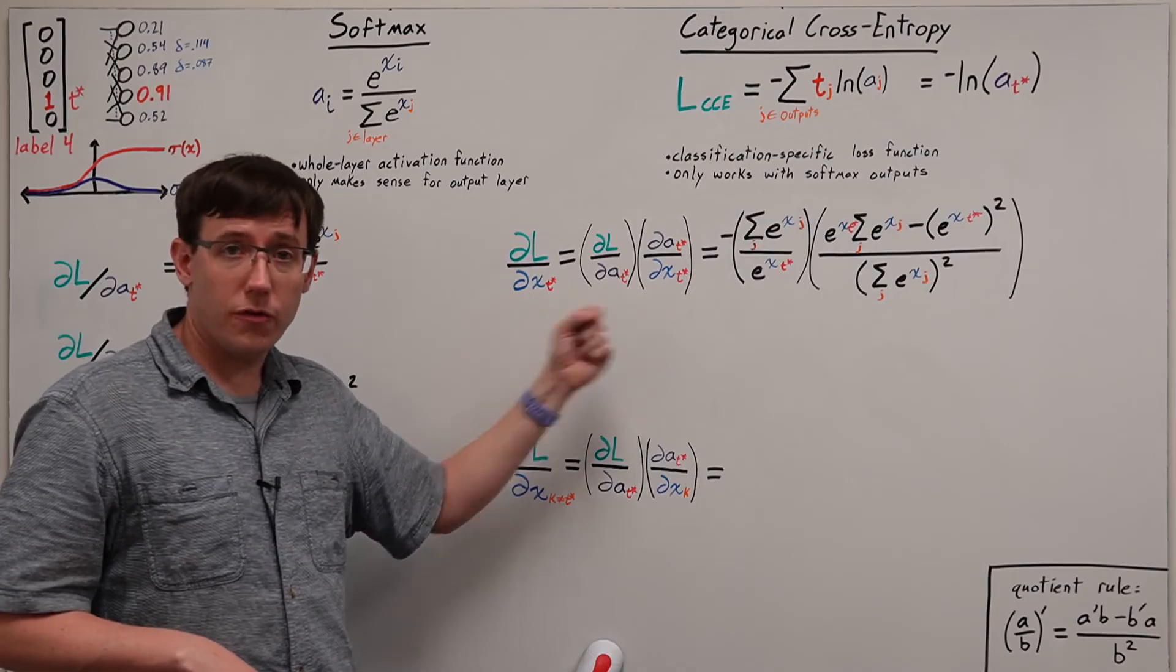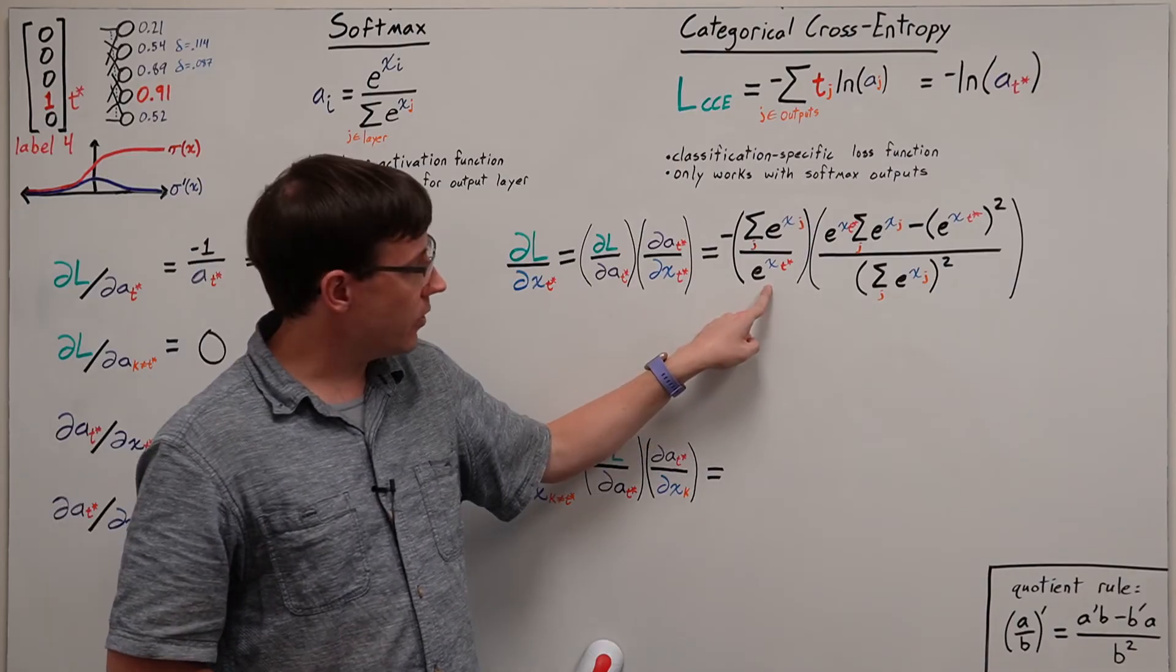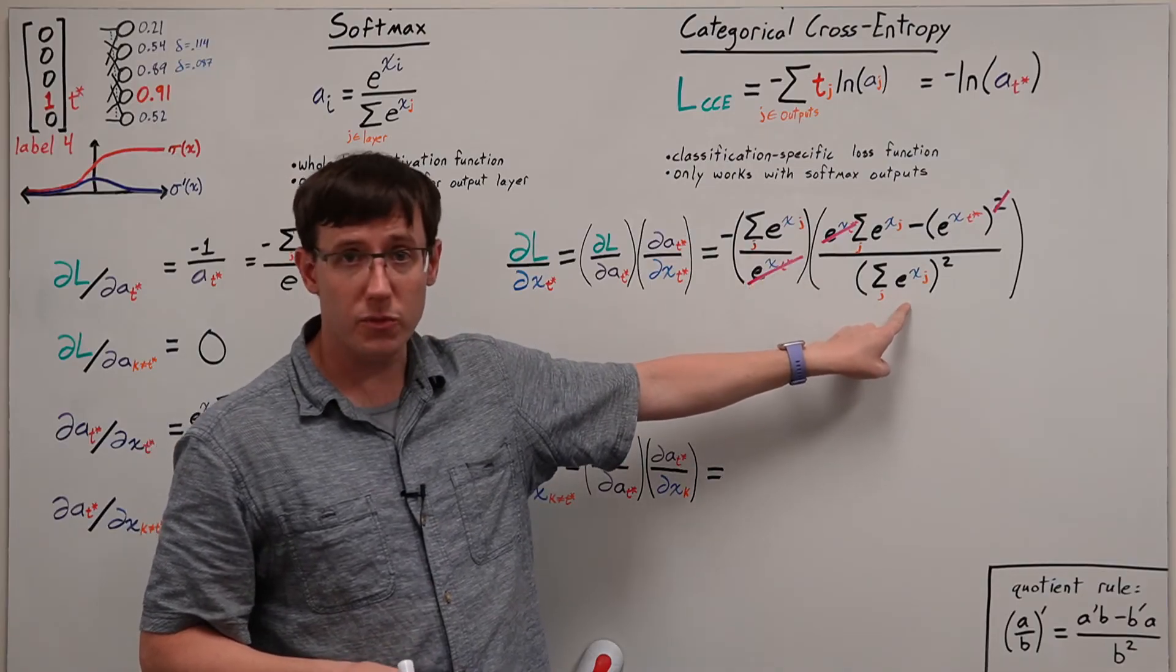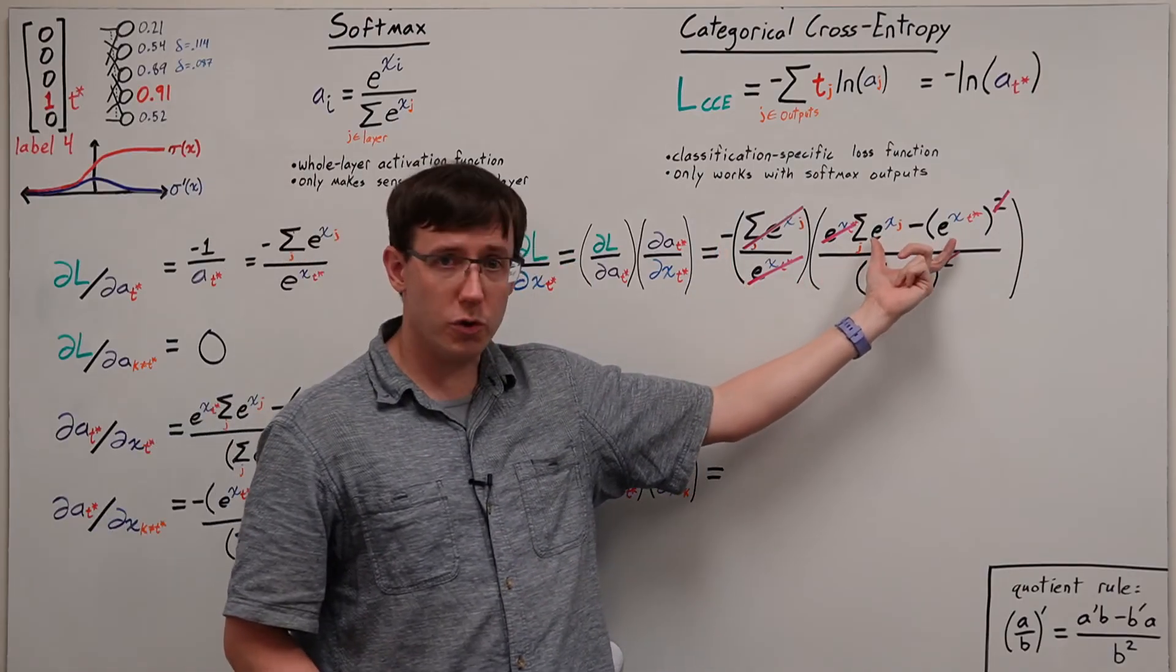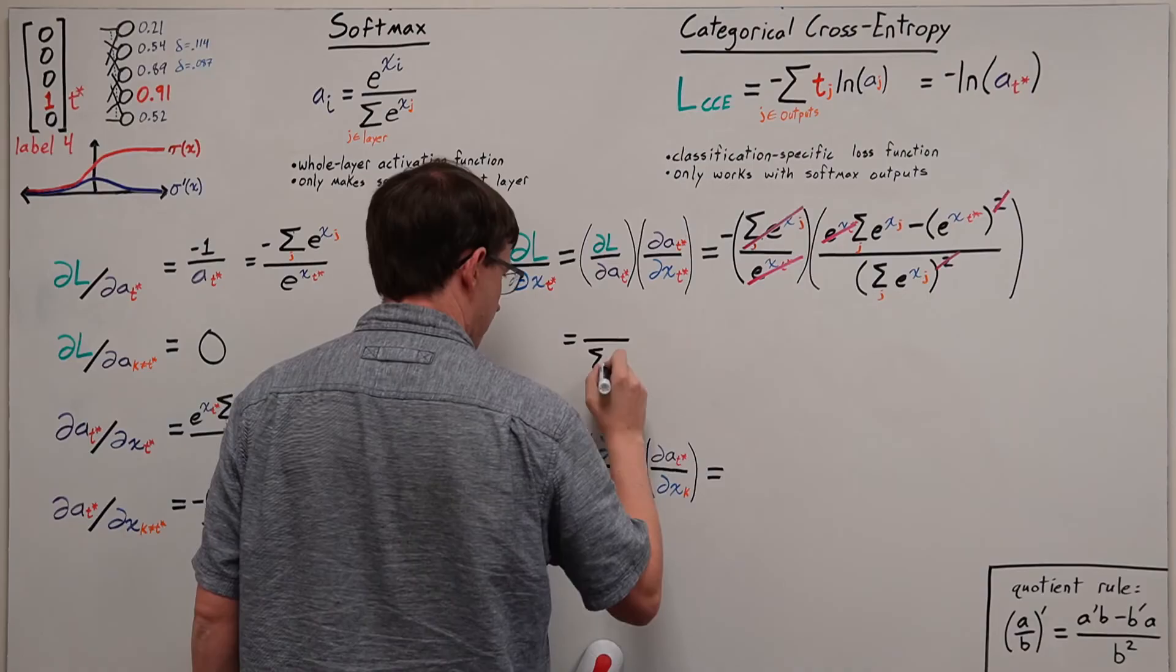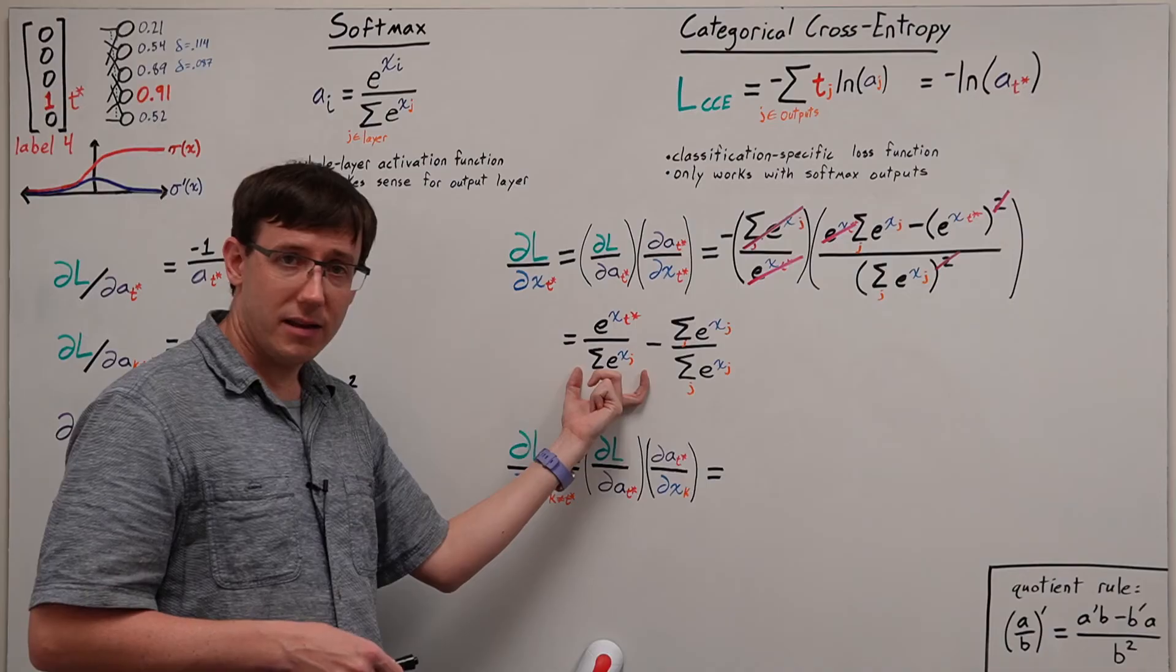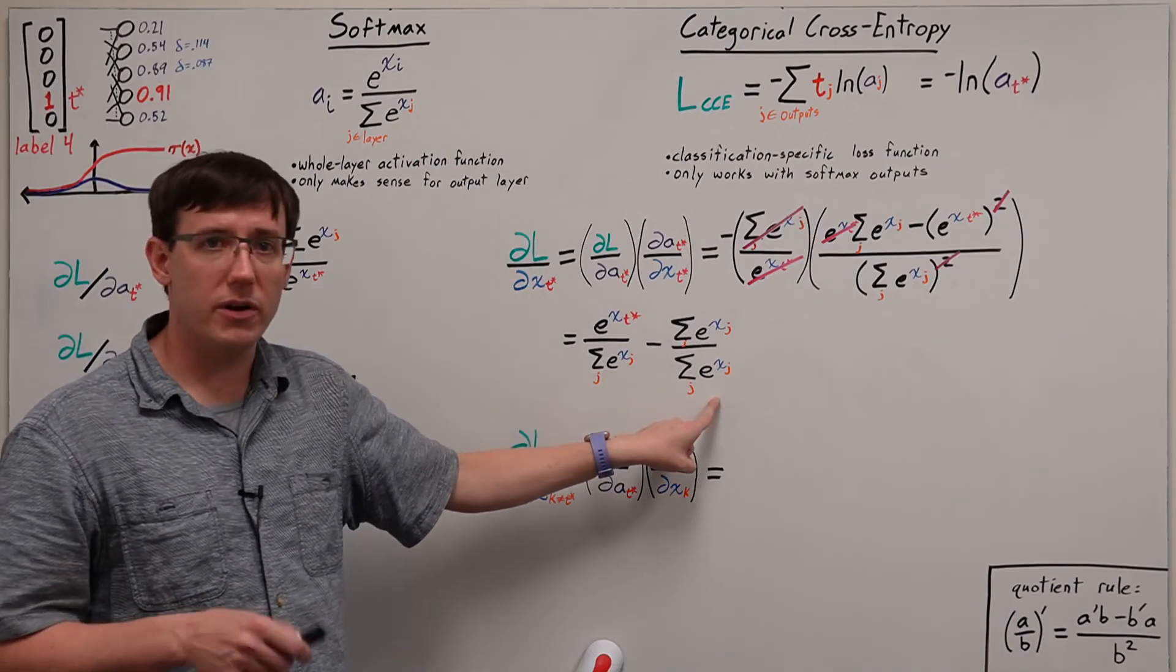When we write out this product for the t star node, we see lots of things we can cancel. The e to the xt star in the denominator cancels with the one that we can factor out from the difference. And the sum in this numerator cancels with one of the sums in the denominator. And we're left with the minus sign out front, and then these two terms in the numerator that we can split up and simplify further. And here we have, as the first term, exactly the activation for the t star node minus a second term that simplifies to one.